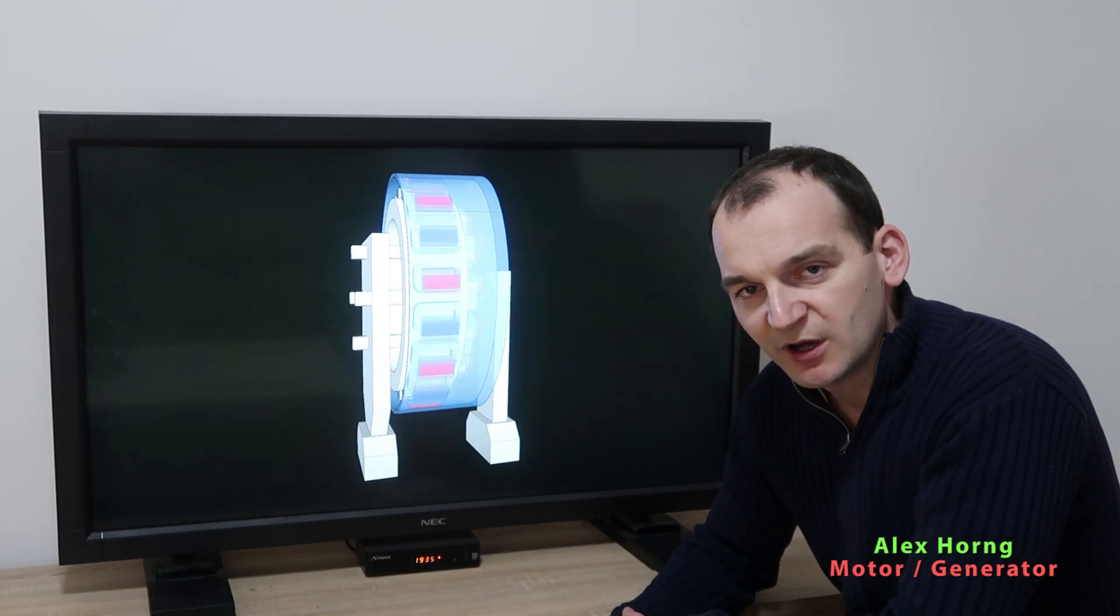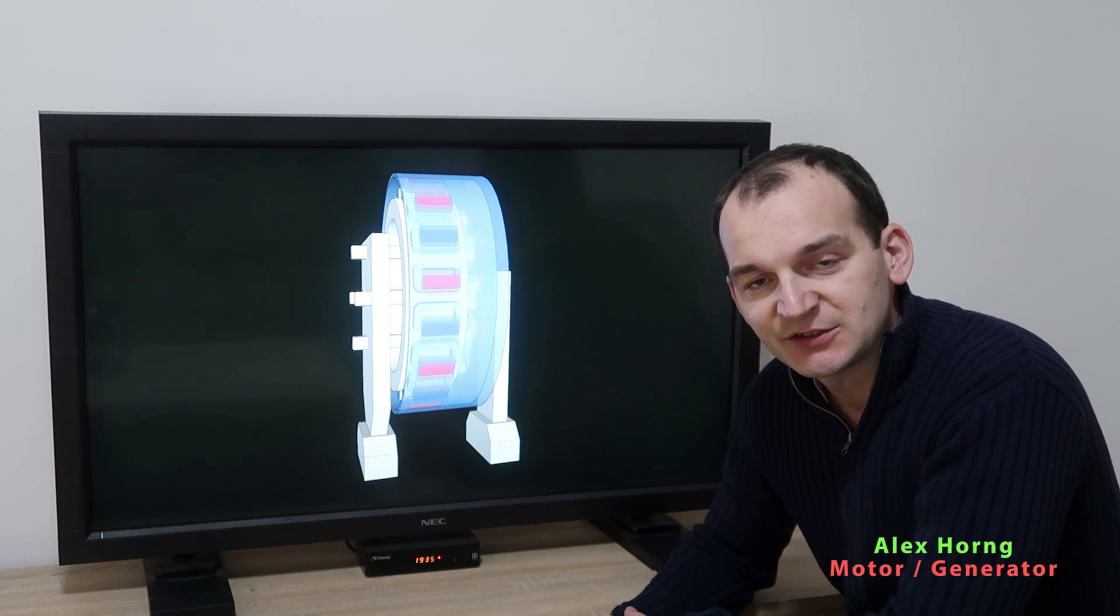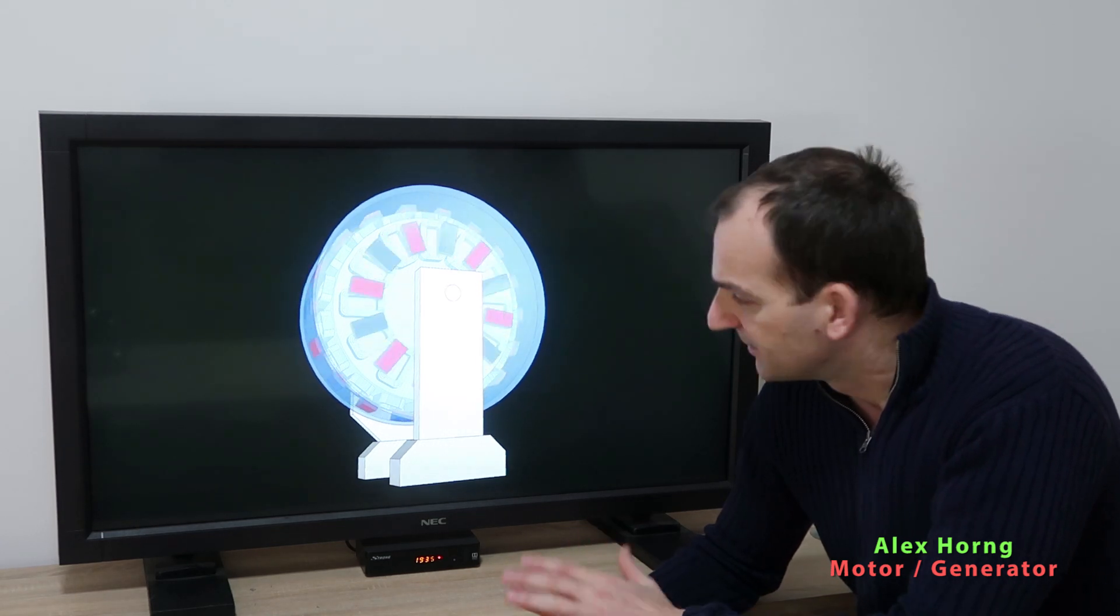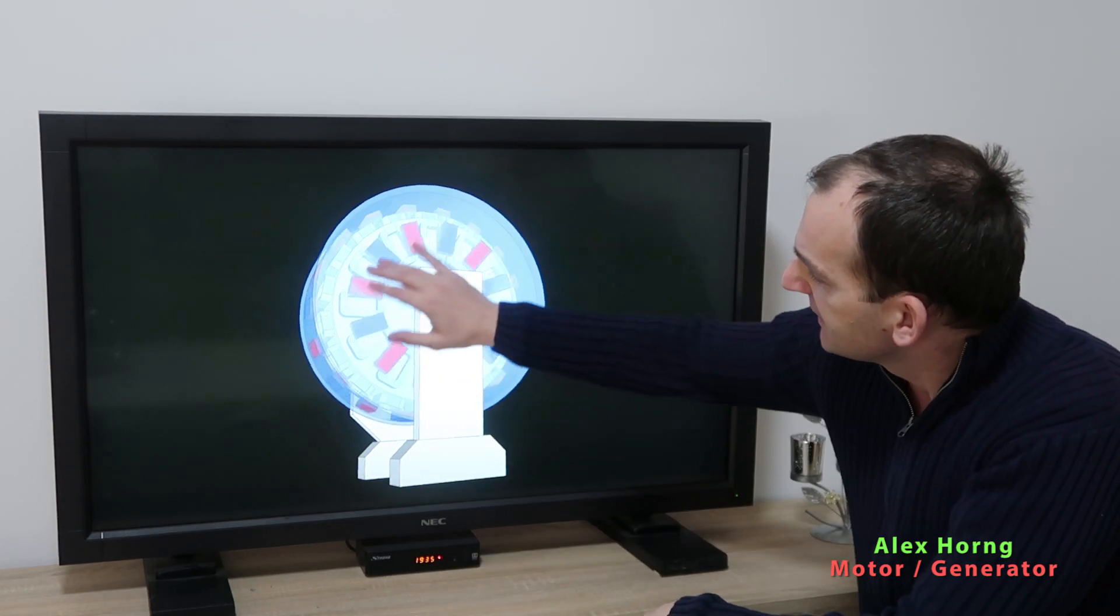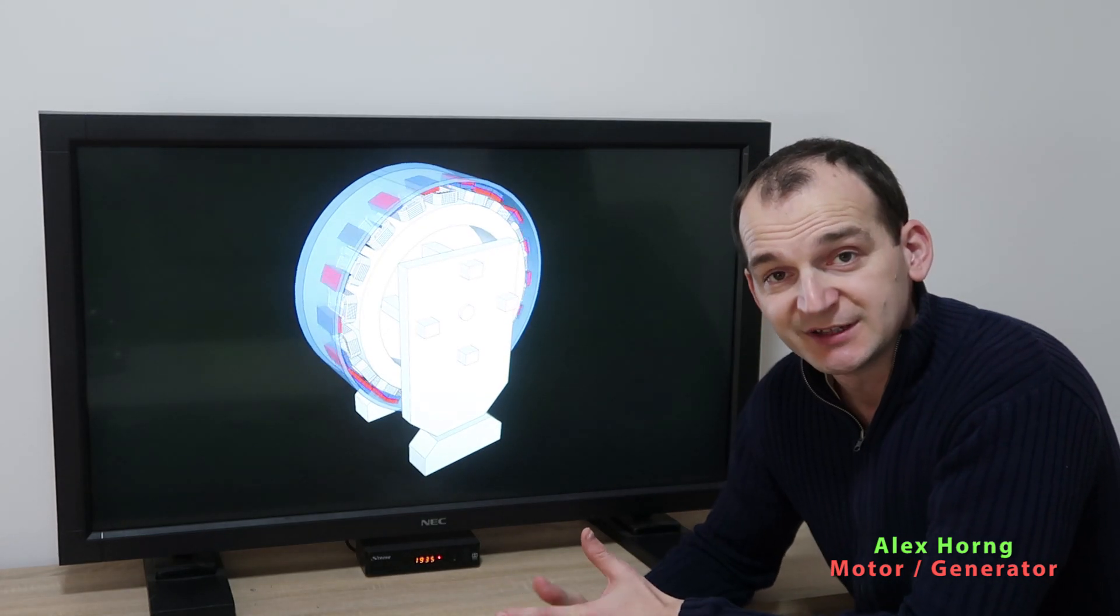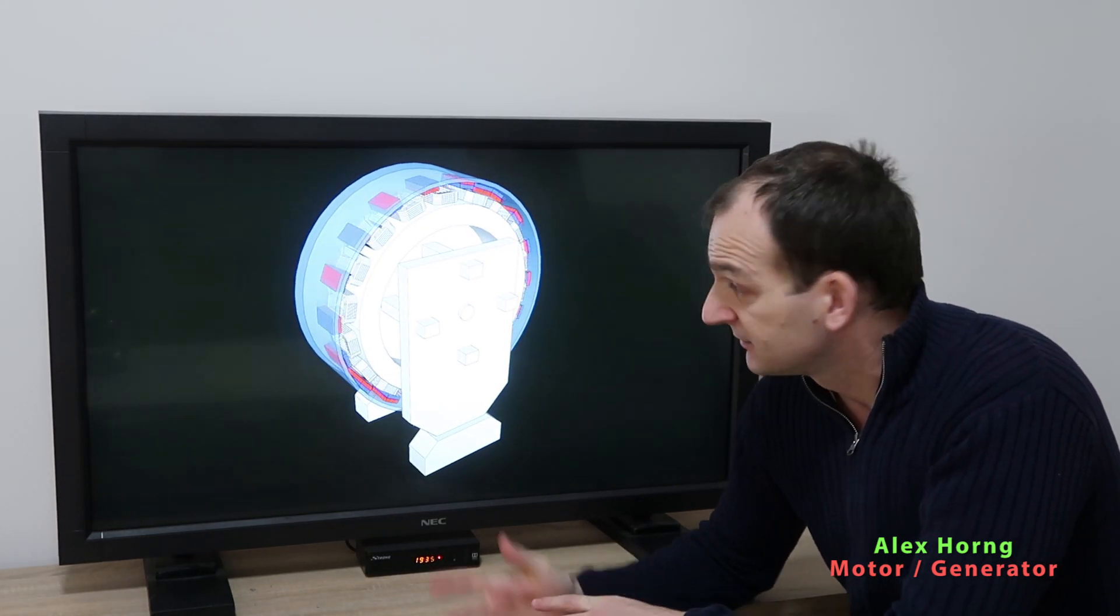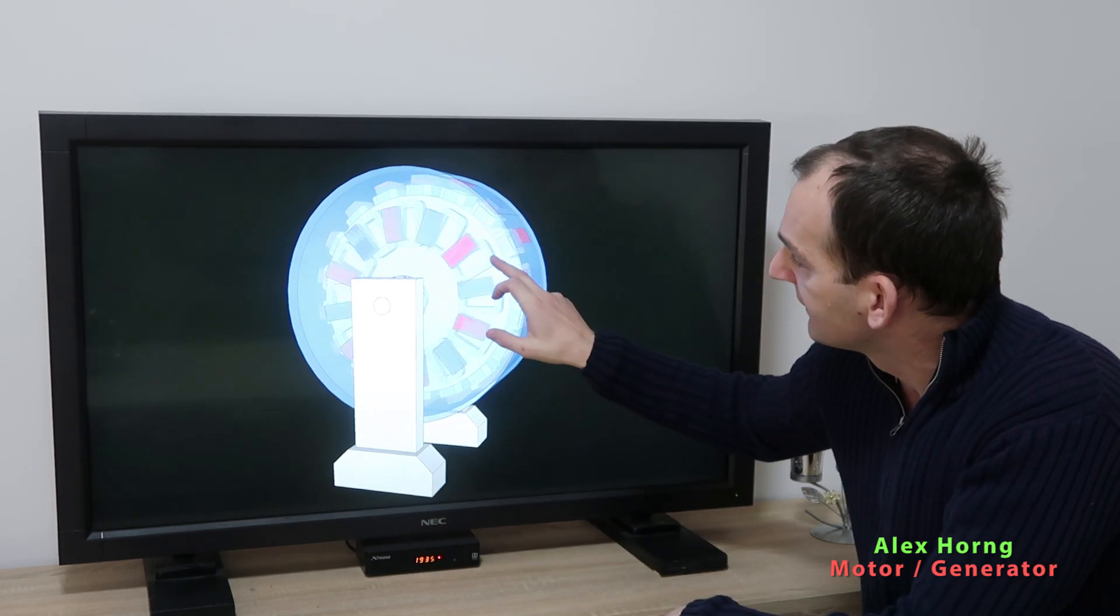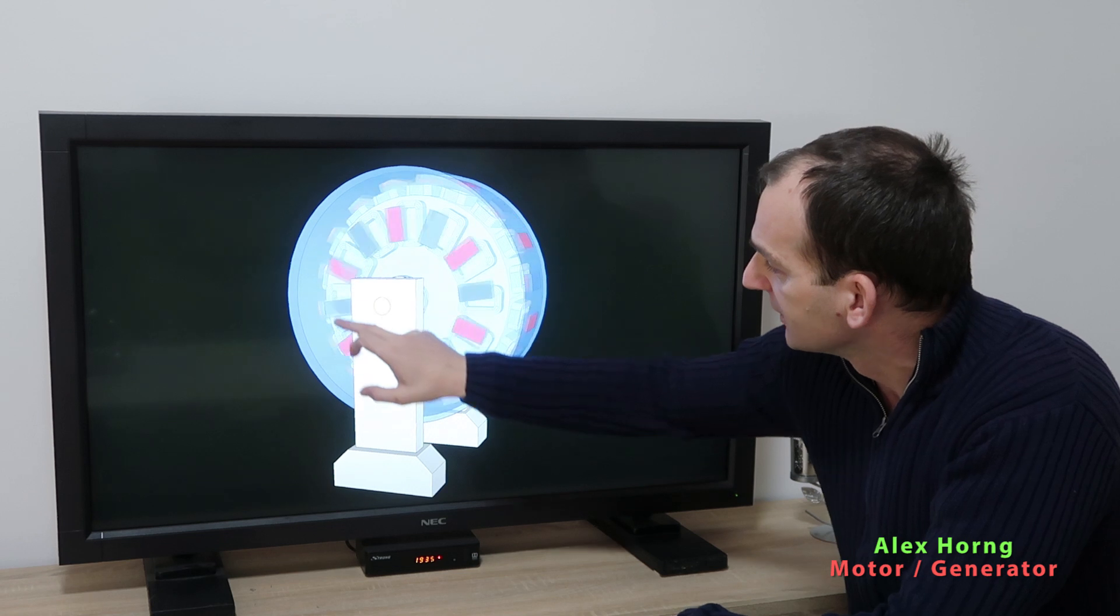How would this work? So how did this inventor think that we can get over unity in such a system? It's very simple. For example, this inner set of coils would be our motor coils.